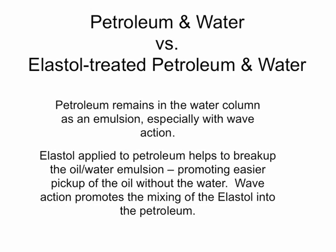When oil is spilled in water, wave action and wind action promote formation of an air-water-oil emulsion, sometimes called a moose. With time, the moose will break down into its component parts. With the addition of Elastal to petroleum, the air-water-oil emulsion will break down quickly, or not form at all. Wave action promotes the mixing of Elastal into the spilled oil and makes the viscoelastic action stronger, holding the spill together for recovery.